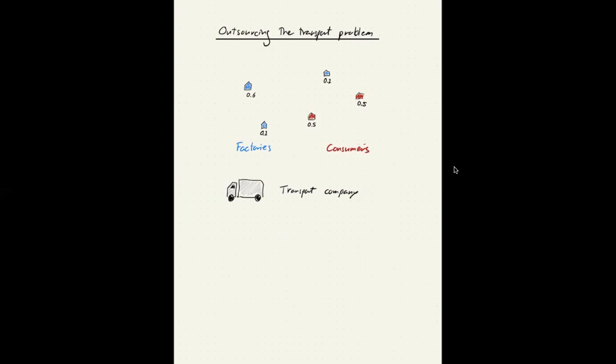Now the dual problem can be thought of as outsourcing this problem. So instead of arranging the transport ourselves, we're meeting with a transport company. And this transport company wants to strike a deal with us where they charge us not per mile and goods transported, but they're going to charge us a certain amount for picking up goods in each location.